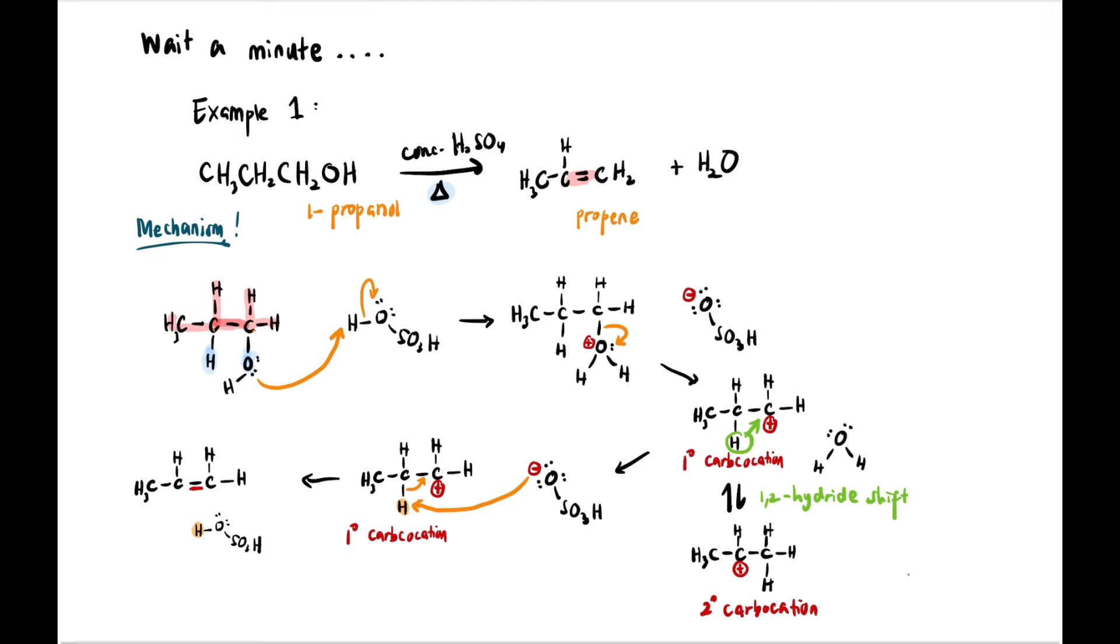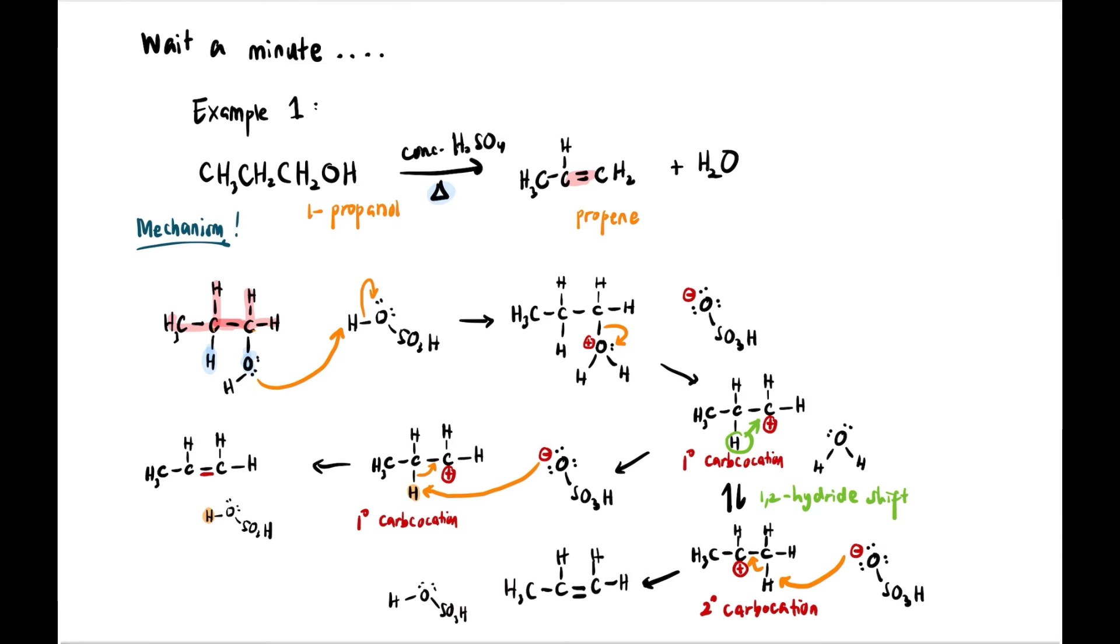Alright, now we continue. If it's secondary carbocation, let's say HOSO comes back to attack the adjacent hydrogen - it attacks the hydrogen on the side, left or right is the same actually - it attacks and then we get a double bond in the middle. So we will get something like this. Check and check - it turns out our alkene is the same whether we shift or not shift. Same.